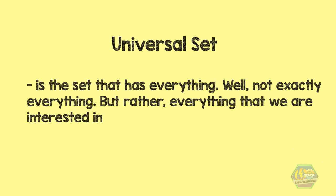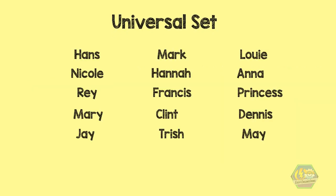Recall the universal set that we discussed in the previous video. Universal set is the set that has everything. Well, not exactly everything, but rather everything that we are interested in. In our example, we have 15 students in the class, but only few were mentioned, right? You see, all 15 students are part of the universal set. In mathematics, the universal set is denoted by the capital letter U, which is easily confused with the symbol U for union. Just be careful about it. Now, going back to the example, we'll let U be the students in the class.